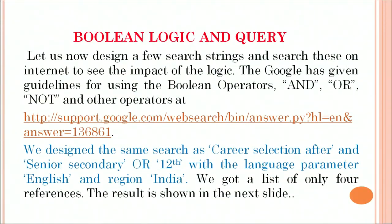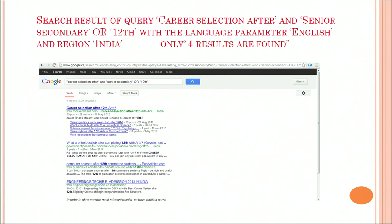Boolean logic and query. Now we are coming to Boolean logic and query. Let us design a few search strings and search these on the internet to see the impact of the logic. Google has given us guidelines for using Boolean operators. Boolean operators are AND, OR, NOT, and other operators. We designed the same search query 'selection after senior secondary OR 12th' with the language parameter English and the region India. We got a list of only 4 references, which the result is showing in our next slide.